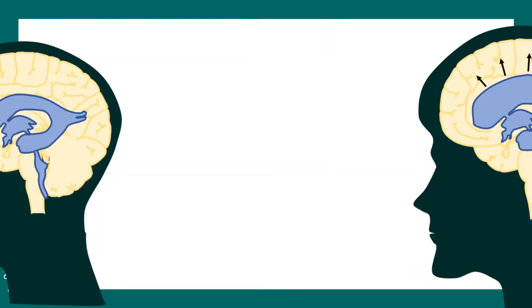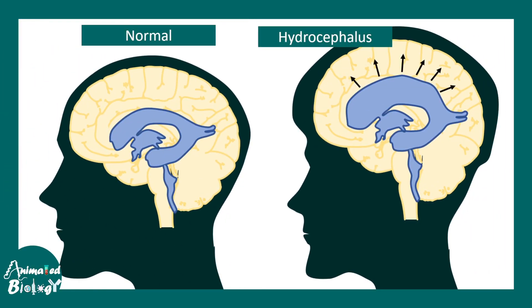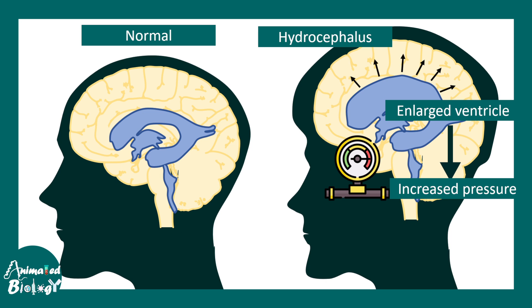Now let's talk about situations where the ventricle grows bigger. This situation is known as hydrocephalus. When there is a significant increase in ventricular pressure, there is an enlarged ventricle which leads to increased pressure in the overall brain. This could be due to a problem in CSF circulation or overproduction of CSF.